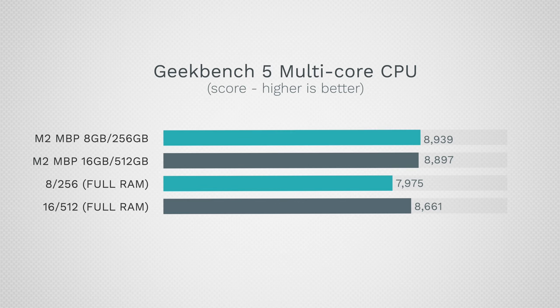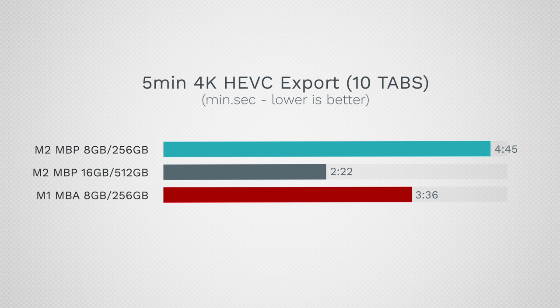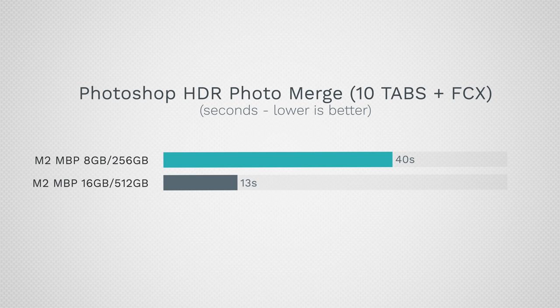Final Geekbench results under full load: the 16GB model slowed down by about 200 in multi-core and a little in single-core. The 8GB model is now close to M1 chip performance levels. But benchmarks don't tell the whole story — people online say this only shows up in benchmarks, but you saw for yourselves how the systems compare in real-world use.